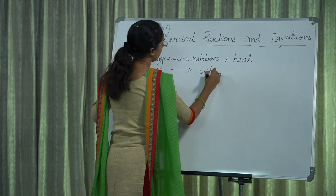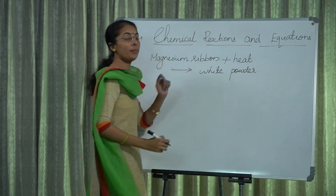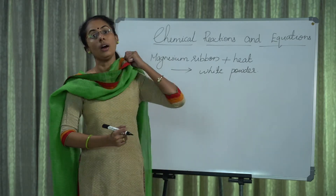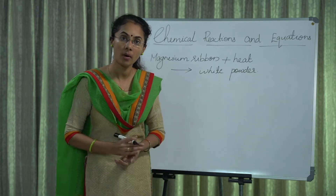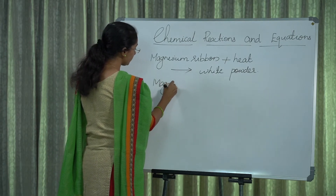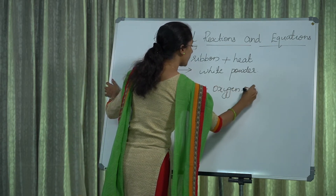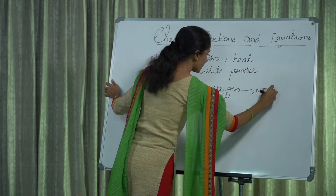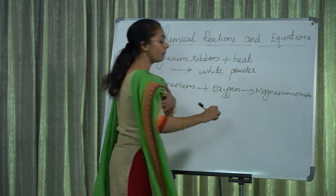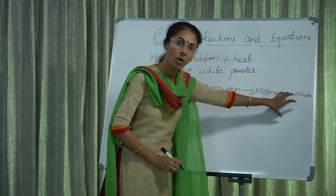The magnesium ribbon, when heated, forms a white powder. What is this white powder? This white powder is magnesium oxide. So magnesium reacts with oxygen to form magnesium oxide.